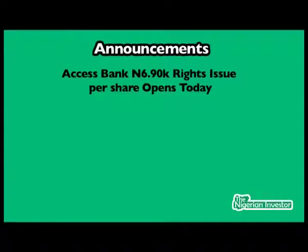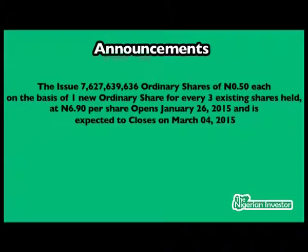An announcement in the market: Access Bank's rights issue opens at 990 kobo per share. The issue of 7,627,633,000 ordinary shares of 50 kobo each, on the basis of one ordinary share for every three existing shares, at 990 kobo per share, opens on January 26, 2015, and is expected to close on March 4, 2015.